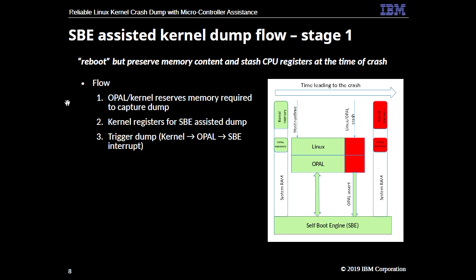Moving on to the next slide - with that background on the chips and systems, I will introduce how we achieved reliable dump with SBE assistance. There are three stages. On the first stage, how we get reliability is by rebooting the system but preserving the memory content as well as the CPU register state, so that in the next boot the firmware will help us move the content to the reserved memory so that we can capture the dumps.